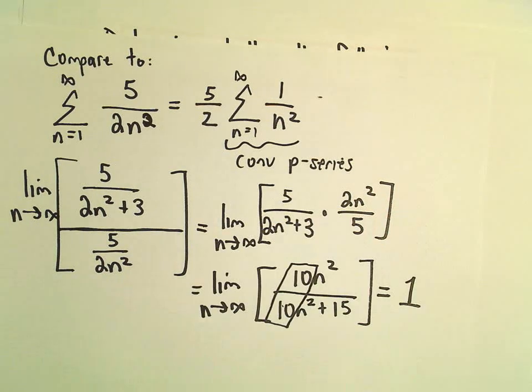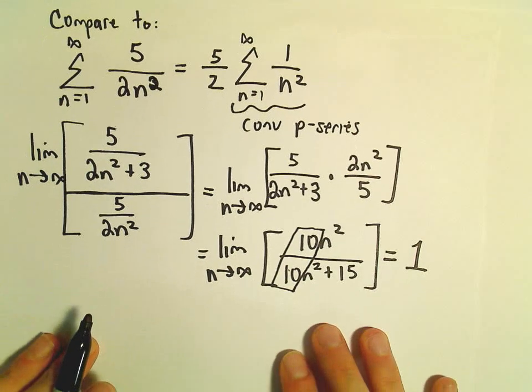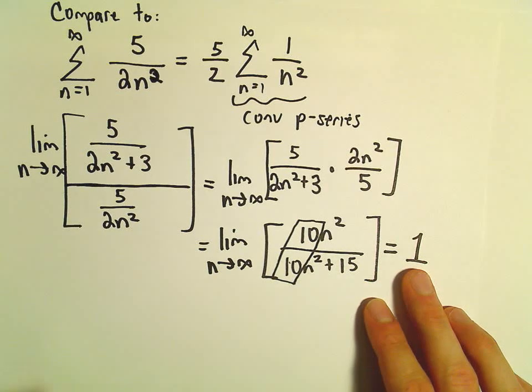Or in this case 1. And recall the limit comparison test simply says that if you have a positive finite number, both series do the same thing.